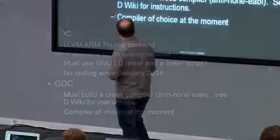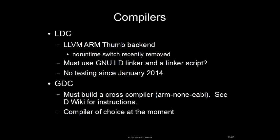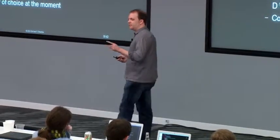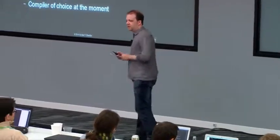For GDC, you have to build a cross-compiler. I had some trouble with this but eventually figured it out and put together instructions on the D wiki describing how to build a cross-compiler for this platform — the arm-none-eabi. GDC is currently the compiler of choice for all my work. The LDC folks did fix a couple of bugs for me; I'd like to get back to it and test those.